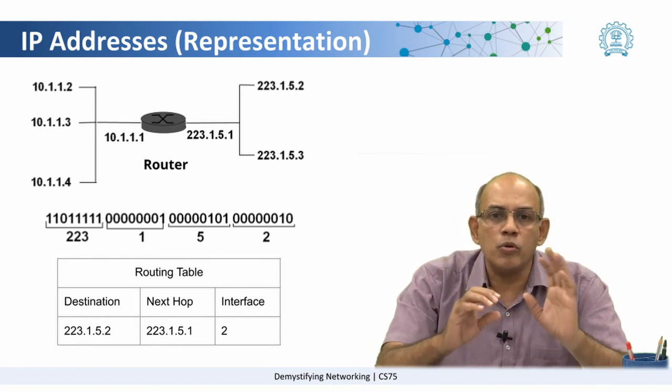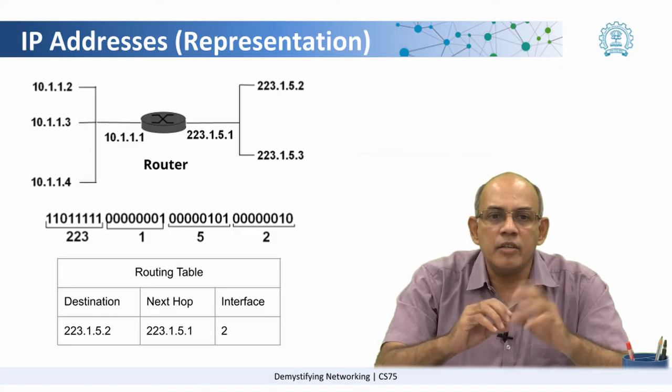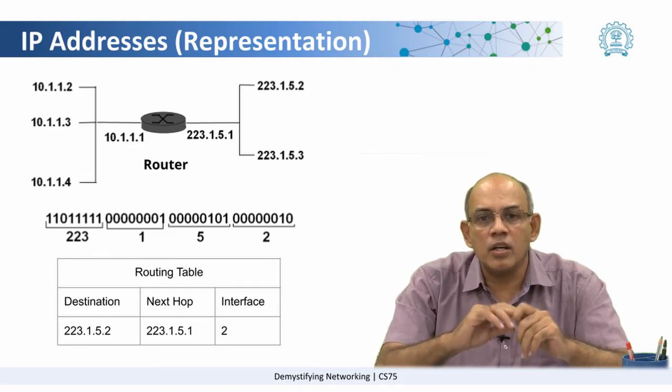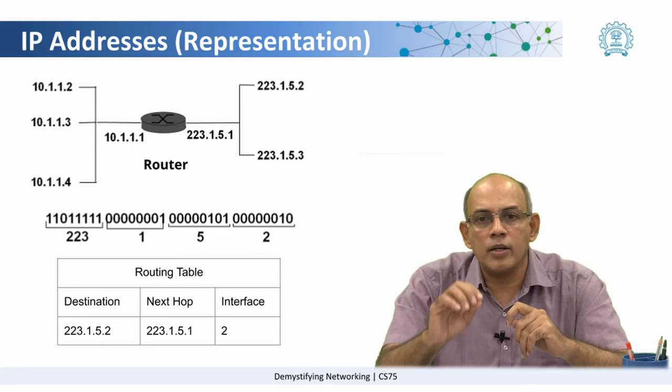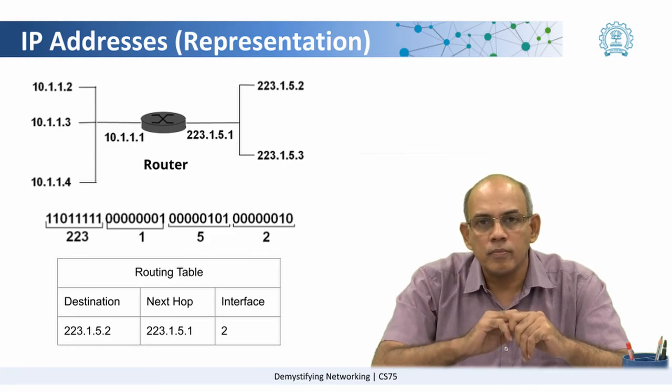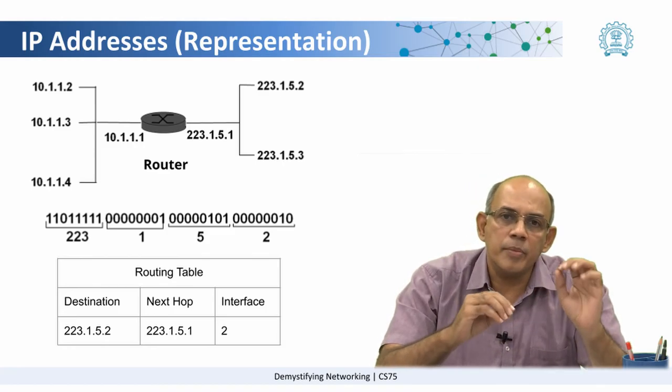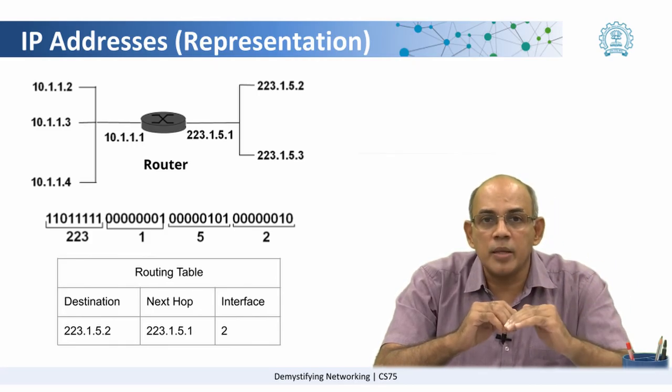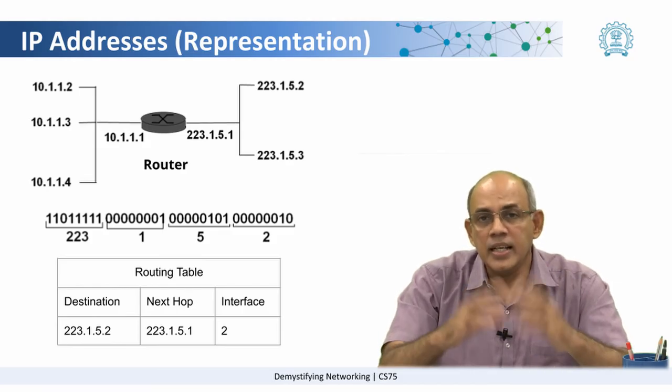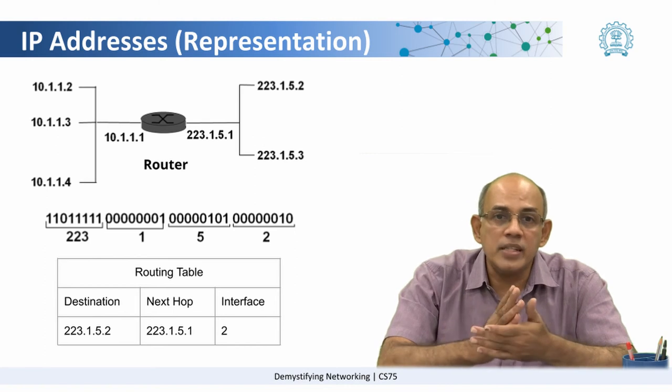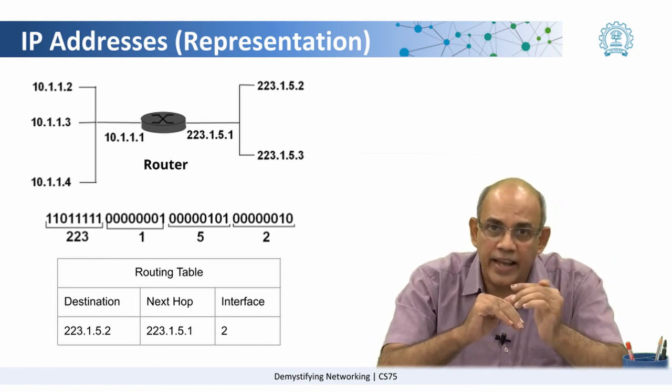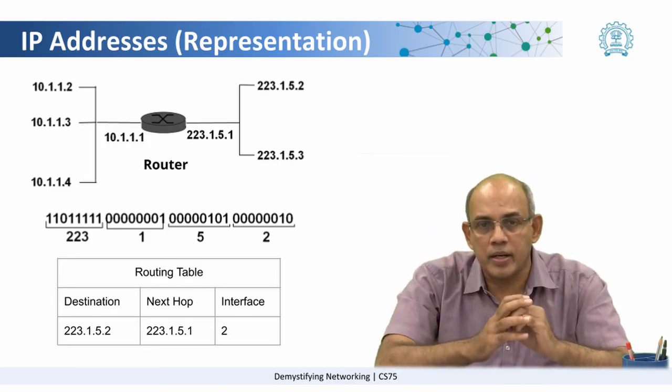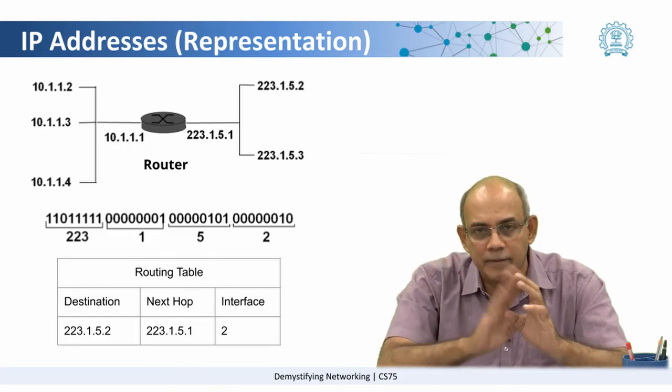What does the router have? Suppose you look at the machine which says 10.1.1.2 wants to send a packet to the server which is at 223.1.5.2. Essentially what will happen is that the machine which is there at one end of the network knows where to send the packet in order to reach the router. In the router there will be a table which will say that if a packet comes on this line with this IP address and wants to go out to that IP address, then it has to be sent out on that line.